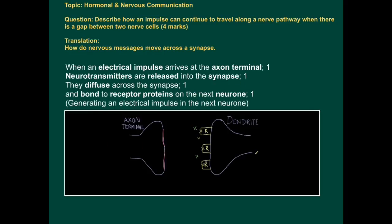Electrical impulse arrives. Neurotransmitters are released into the synapse. They diffuse across the synapse and bond to these protein receptors on the next neuron.